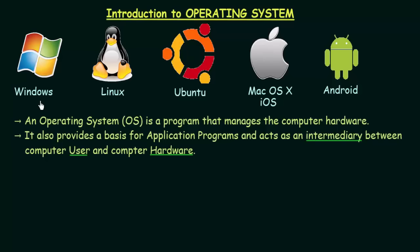Here are some examples of Operating Systems that we widely use these days. First is Windows, which you may be using on your desktop or laptop. We also have Linux and Ubuntu, which are open source Operating Systems. Then we have Mac OS from Apple, used in MacBooks. In iPhones we find iOS, and then we have the very famous Android used for mobile devices.